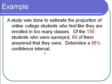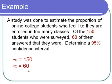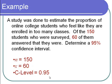What I like to do is start by writing down my cast of characters. 150 students is the sample size, so n equals 150. 60 answered they were taking too many classes, so that's the number of successes: x equals 60. We want a 95% confidence interval, so the C-Level equals 0.95. Now let's go to the calculator.